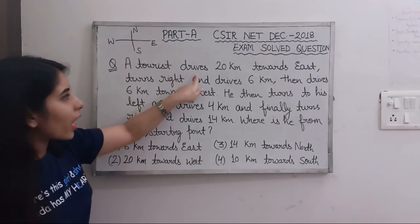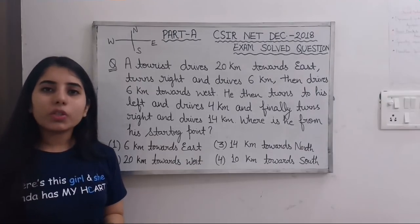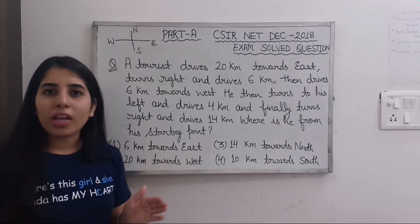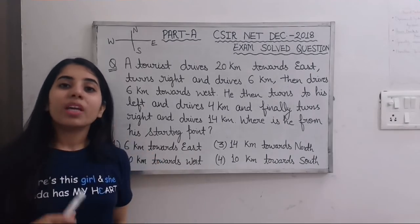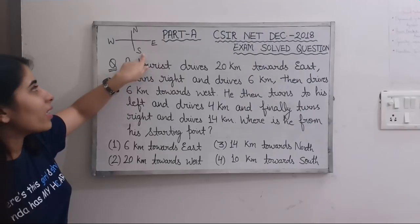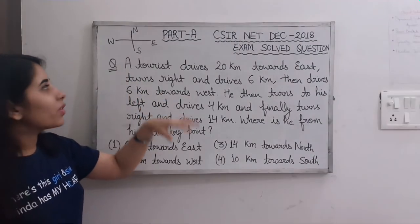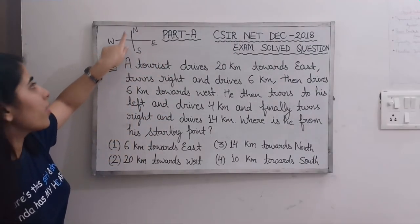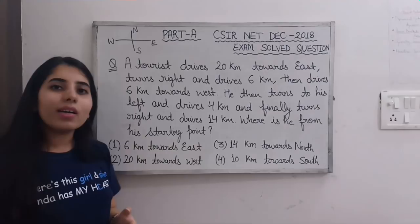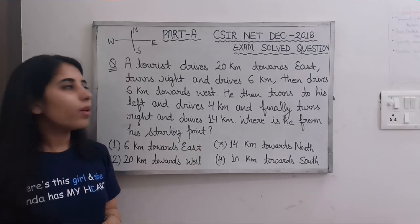To solve such questions, you just need to read the statements one by one. If you read the statements one by one, it will be very easy. You also need to draw a diagram showing which direction is east, west, north, and south — this makes things very easy for such questions. Read one statement, then draw the corresponding move.